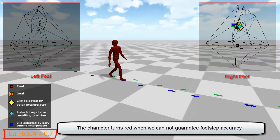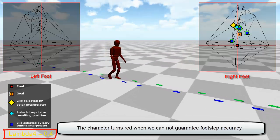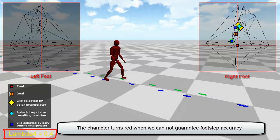As lambda 4 decreases back to 0, the agent can slowly recover and land its feet over the footsteps again.